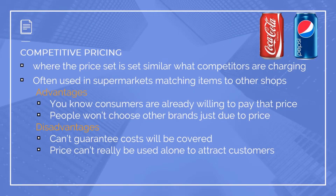The first one is competitive pricing. This can take place at 2 different levels. First, you can compare it with any other similar products, and that could be what you come up with for your recommended retail price. So Coca-Cola, for example, will come up with a recommended retail price for their cans, and so will Pepsi, and they will be very similar. Competitive pricing is where the price is set similar to what competitors are charging.